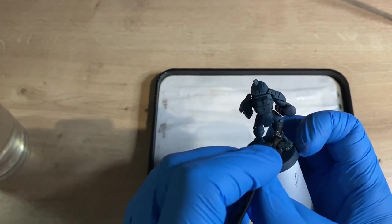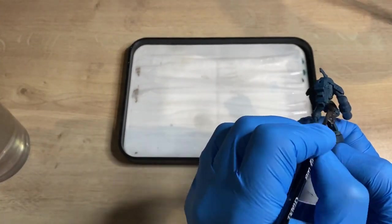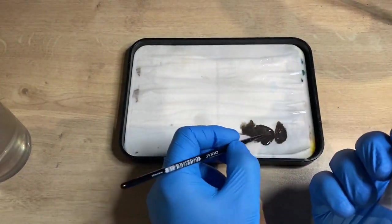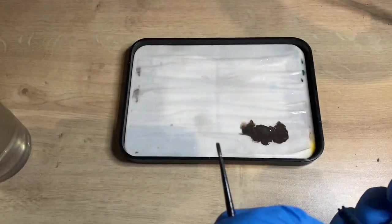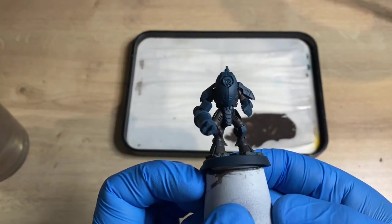One, we're going to be using black on another part of the model, and two, if you use a wash over black, not a lot happens. With a speed paint we don't really want to be going in and doing highlights and picking up raised surfaces, we just want to be chucking a wash on it and getting it ready for the table. So that's why we're using a slightly lighter color.